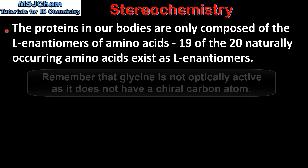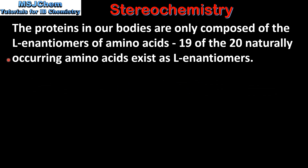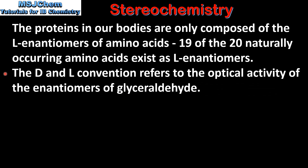The proteins in our bodies are only composed of the L enantiomers of amino acids. This means that 19 of the 20 naturally occurring amino acids exist as L enantiomers. The D/L convention refers to the optical activity of the enantiomers of glyceraldehyde.